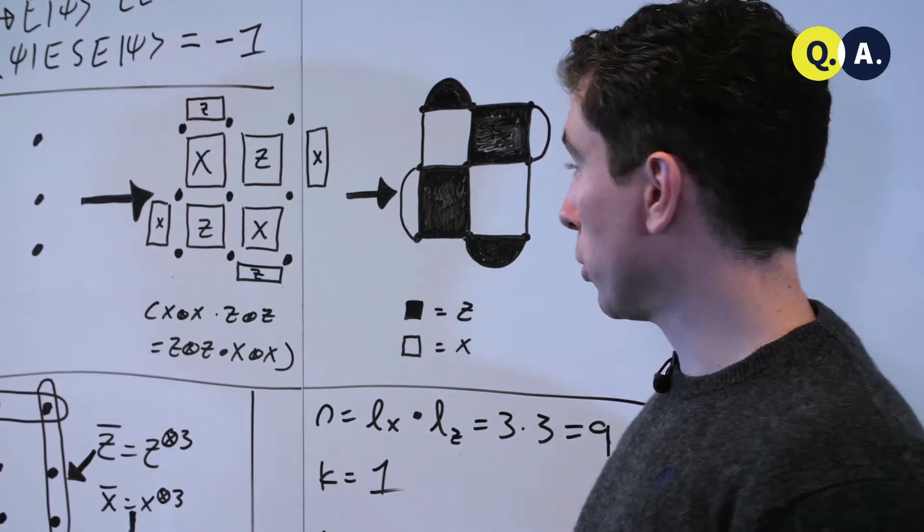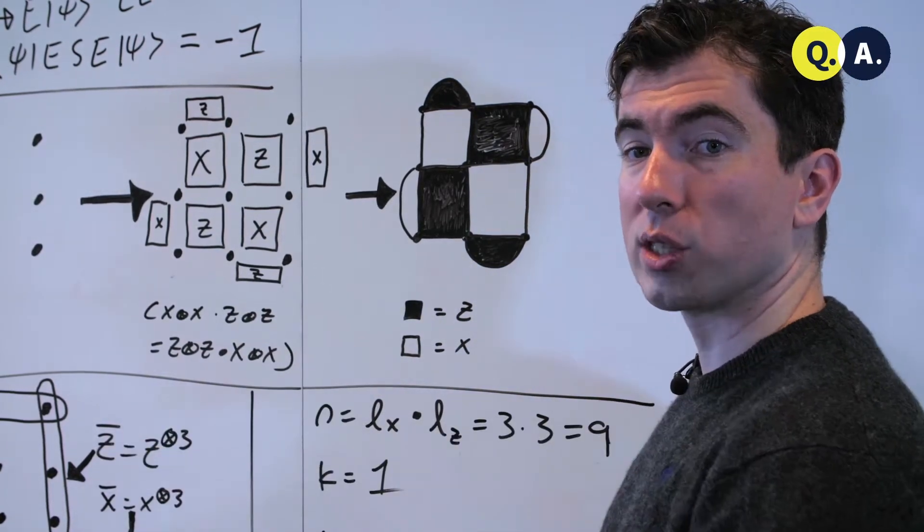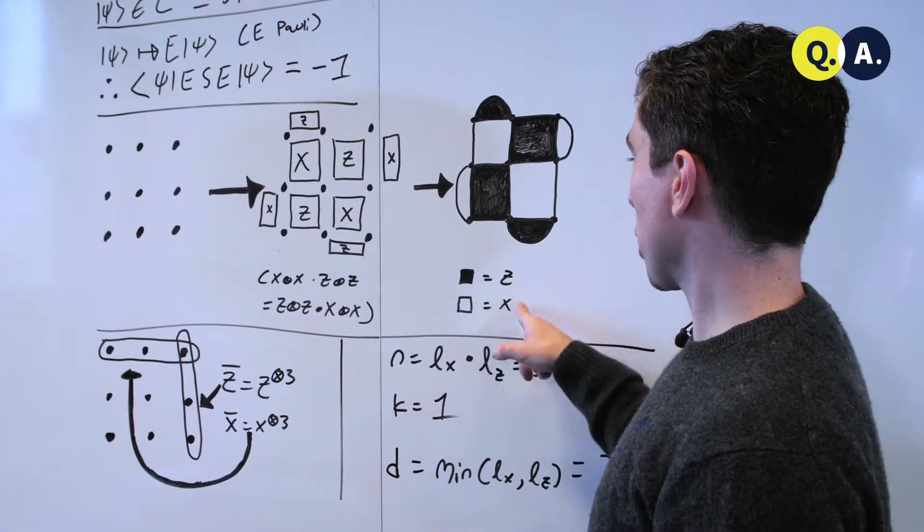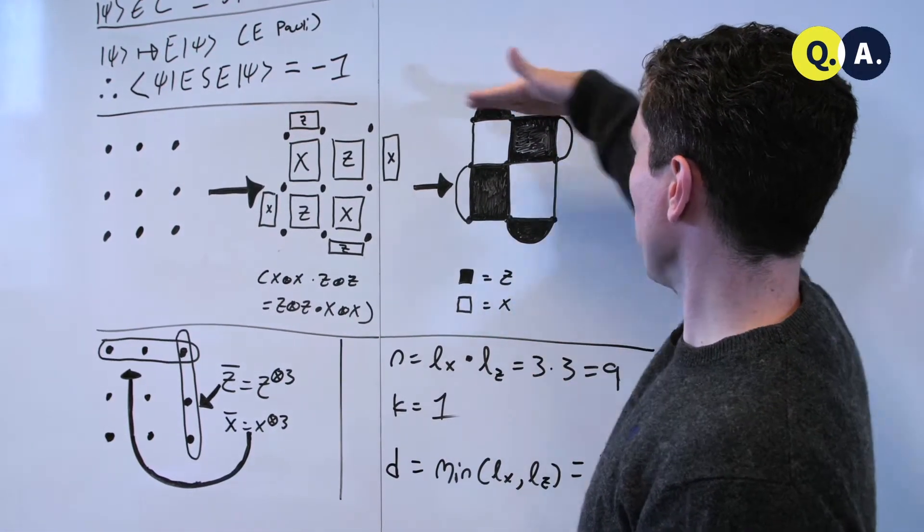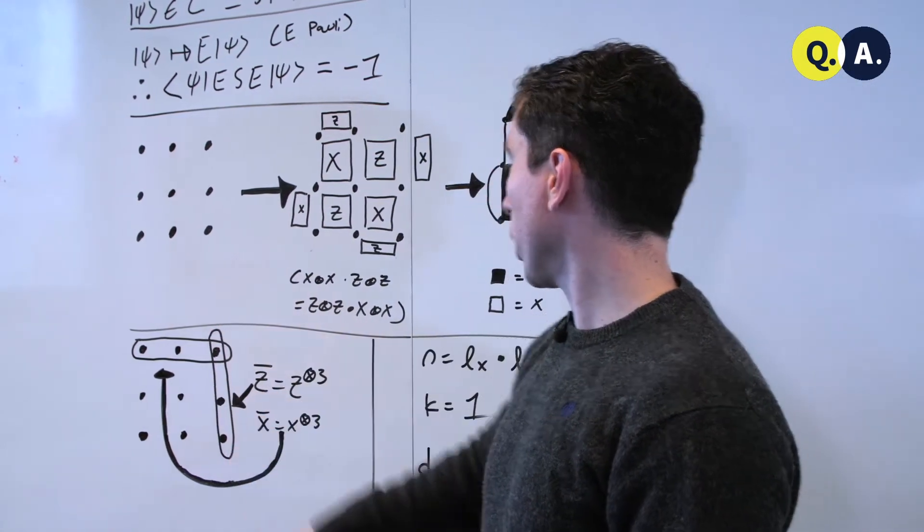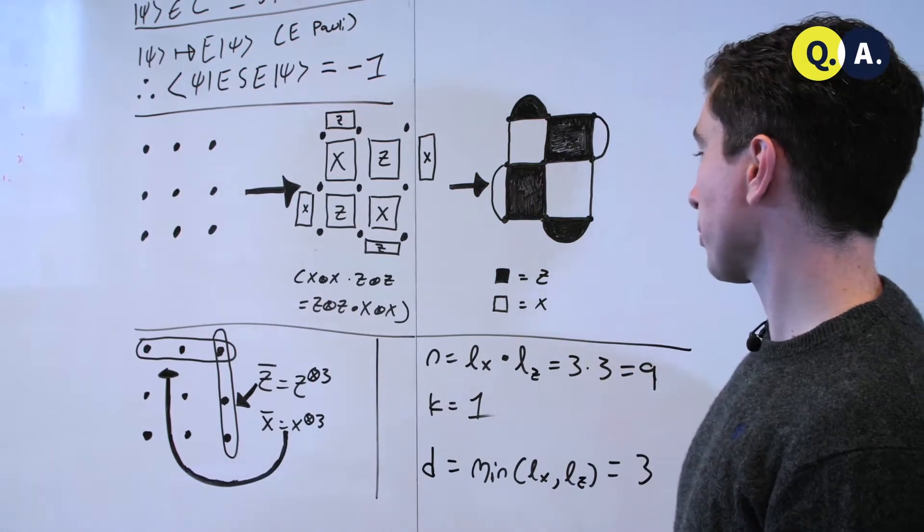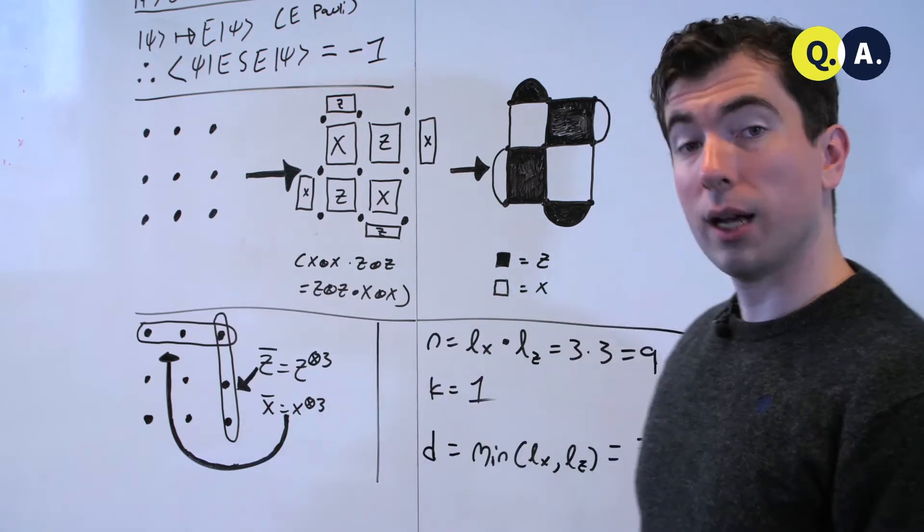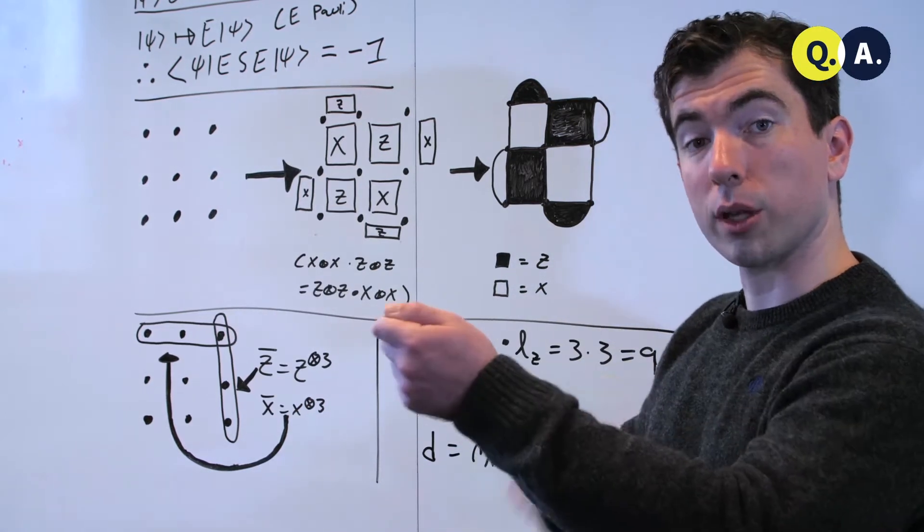The logical operators for this code run all the way over one side of the square or the other. Depending on which color is which, you might have different logical operators on different sides, but here the logical z operator runs down the right side of the tile, and the logical x operator runs across the top. And they're both weight 3, because we're dealing with a 3 by 3 square.